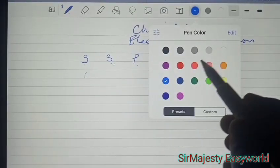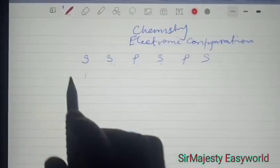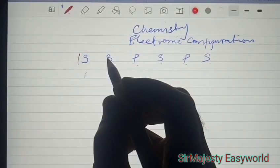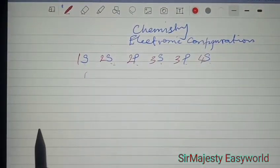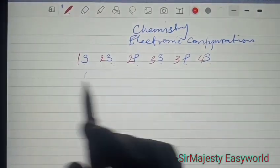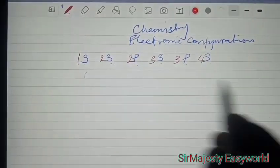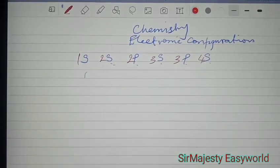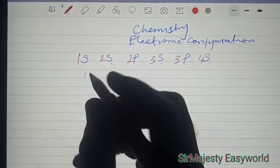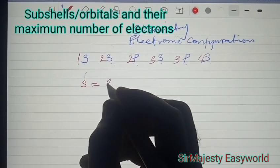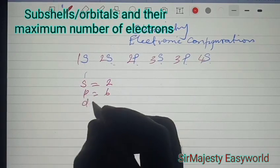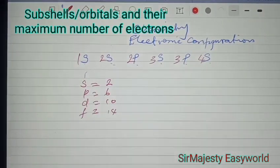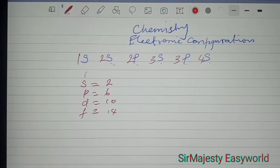Then we place a number behind each of them. The counting today should be 1, 2, 2, 3, 3, 4. So we have S, S, P, S, P, S - 1, 2, 2, 3, 3, 4. That's it for the first 20 elements at least. One should note that whenever you see S, you should not put more than 2 electrons there. When you see P, you should not put more than 6. When you see D, you don't put more than 10. When you see F, you shouldn't put more than 14.